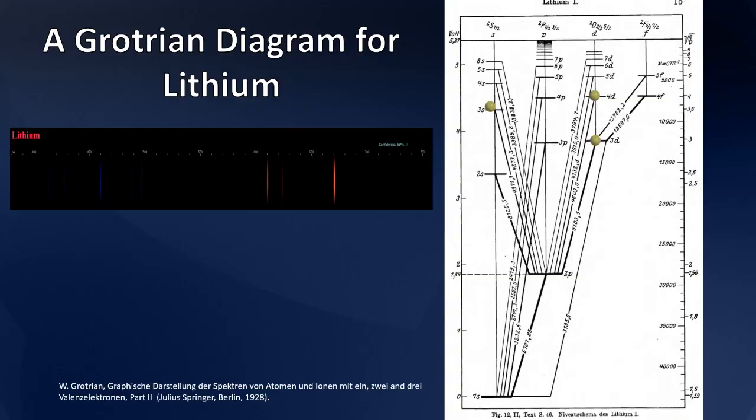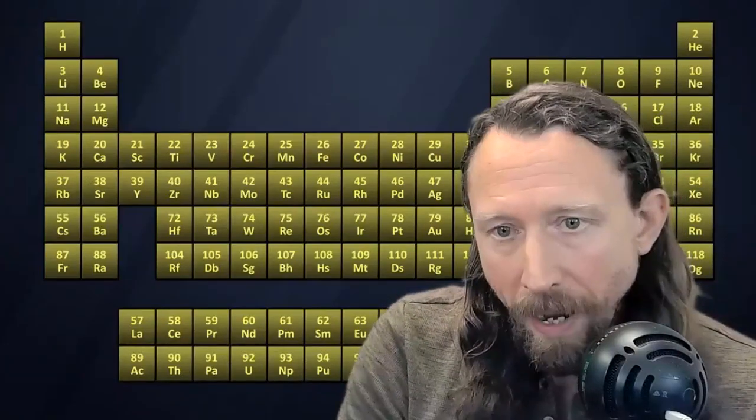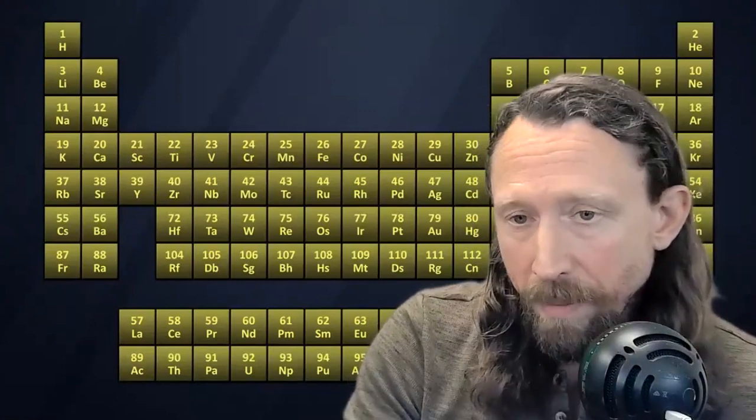And so as these electrons work their way back down into their ground states, what we notice is that they emit, again, specific wavelengths of light. We get some nice little blues. We get some beautiful reds, greens, and oranges.